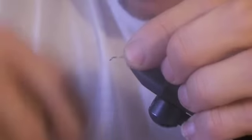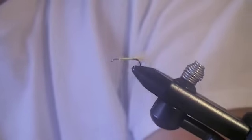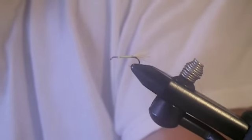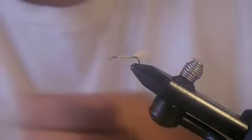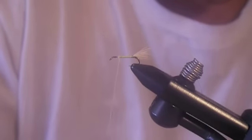The next thing we're going to do is tie in our wings. Again, we're going to use the dyed blonde elk hair for the wings. Here we want a bigger clump, probably about two or three times as much as we used for the tail.